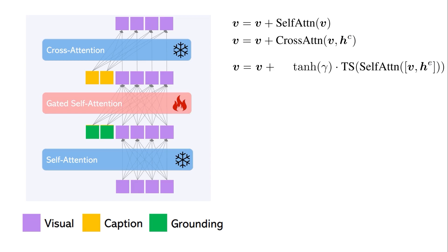The loss function is the standard diffusion model loss: predicting the noise from the output of function f, which receives z_t (the embedding from the previous timestep), t (the current timestep, since different noise is added at each step), and vector Y (the grounding instruction input). This loss does not update the parameters of self-attention or cross-attention — those are frozen, denoted by theta. It instead updates theta-prime parameters, which correspond to the gated self-attention and the MLP that generates the grounding tokens.